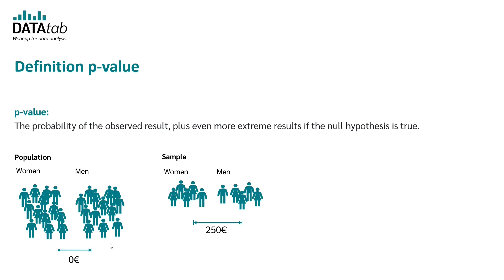So let's say that the p-value is 0.03. This means that it is only 3% likely that we draw a sample where the salary of men and women differs by more than 250 euros, if there is no difference in the population.